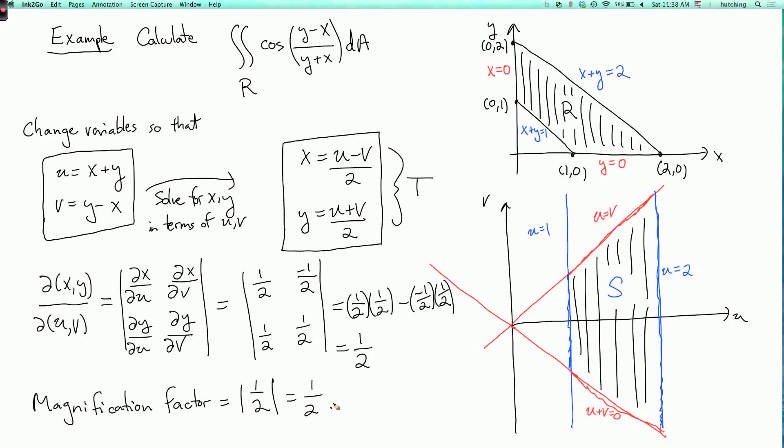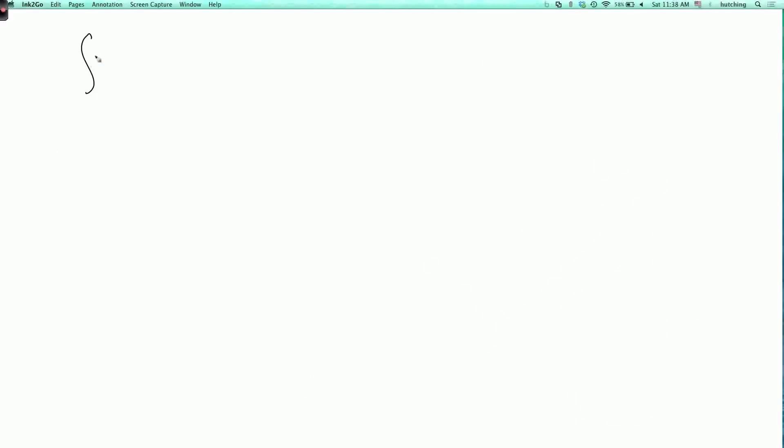So now we're all ready to go. Now we can evaluate the integral in the u-v plane. It may or may not be calculable, but let's try it and see. So we have that the double integral over R of our function f, which here is cosine of y minus x over y plus x. So the function is cosine of v over u, and then we need the magnification factor, which was a half, and then dA.